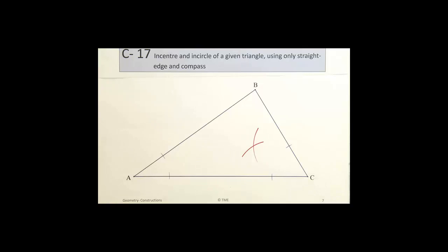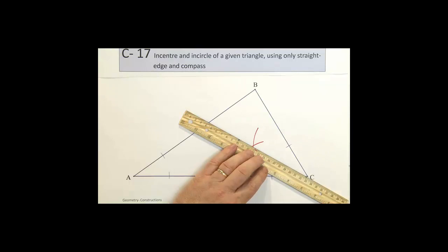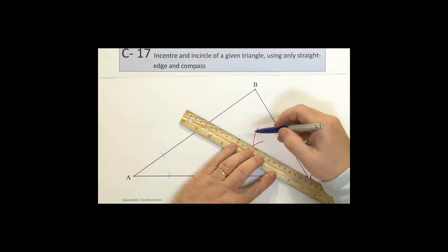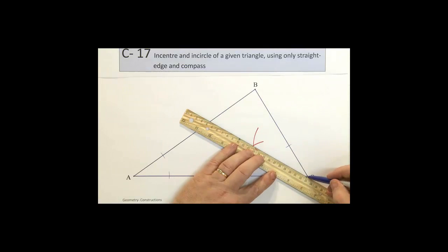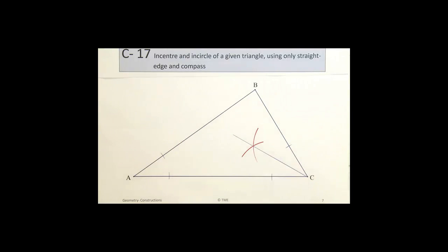That intersection point determines the bisector of that angle. Using C and the point there, draw a construction line through C and this point. This determines the bisection of the angle, so that this angle is the same as this angle. Angle BCA has been bisected by that bisector line.